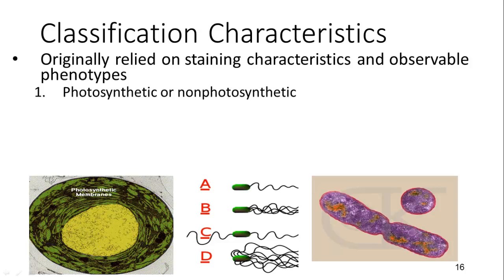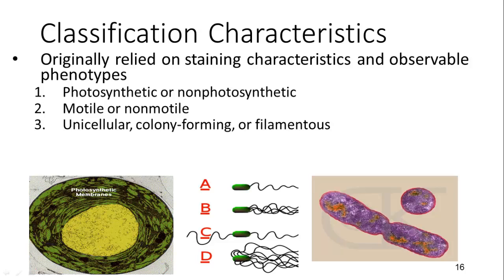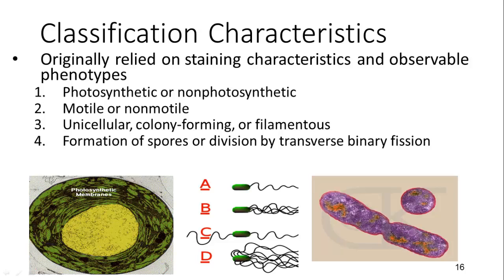Other ways to classify bacteria include looking at their membranes, whether they are photosynthetic or non-photosynthetic — they were the first organisms to perform photosynthesis. They can be motile or non-motile. They can have unicellular behaviors, form colonies, or be filamentous with long strings. They can form spores or reproduce through binary fission. Their importance as human pathogens is also a classification criterion.